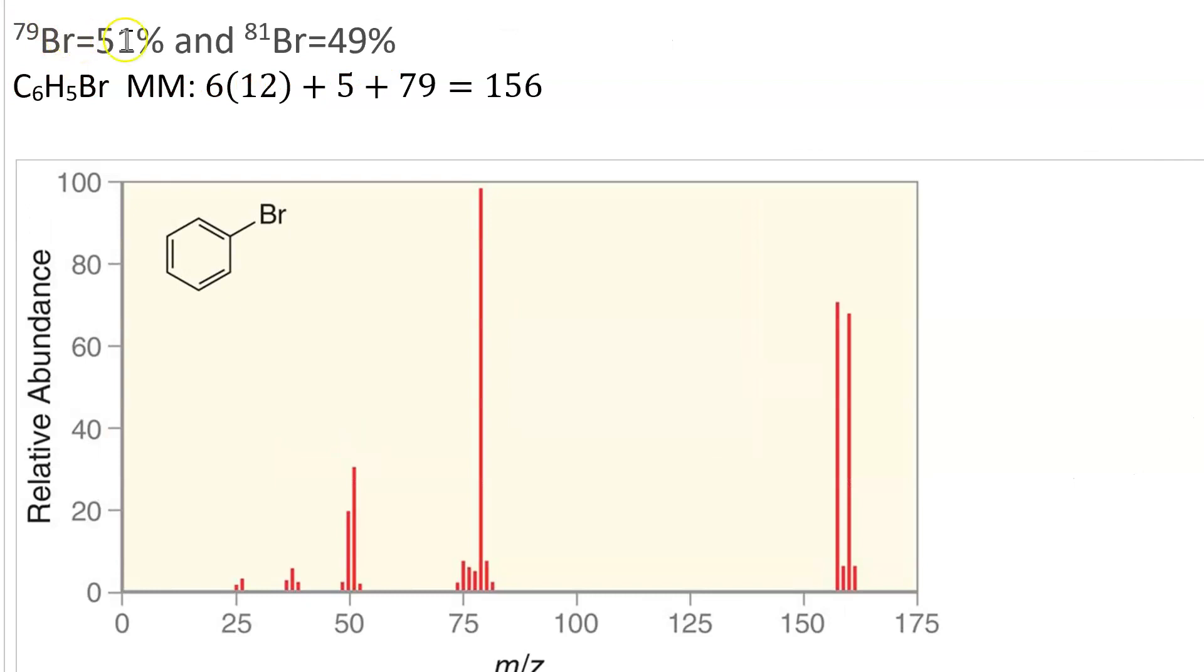Bromine has two isotopes that are nearly equally abundant: 51% of bromine is bromine-79, and 49% of bromine is bromine-81. Therefore, we'd expect the molecular ion peak of bromobenzene to be 6 times 12 for the carbon, plus 5 for the hydrogen, plus 79. So that's our molecular ion peak.